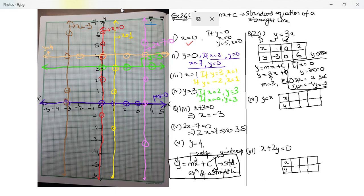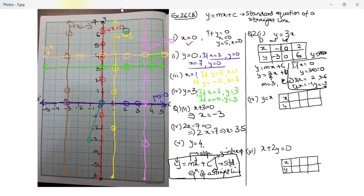So x equal to zero gives y equal to zero. x equal to two gives y equal to six. x equal to negative one gives y equal to negative three. I take a scale and join these three points — they form a straight line. I put arrows on both sides and label it y equal to 3x.